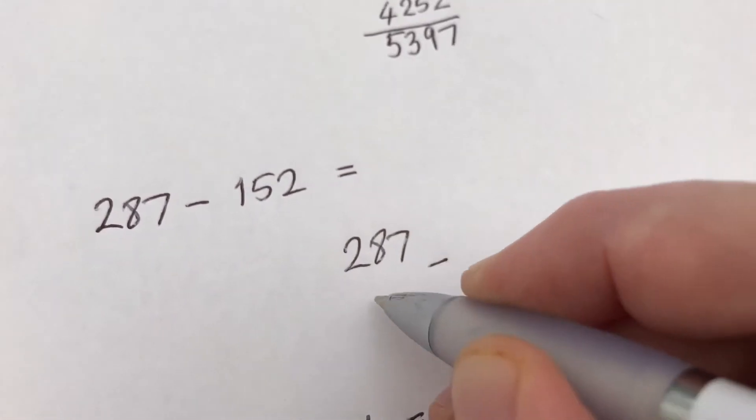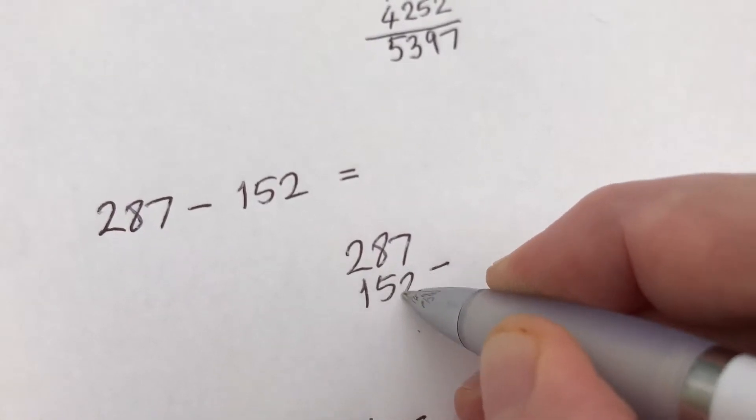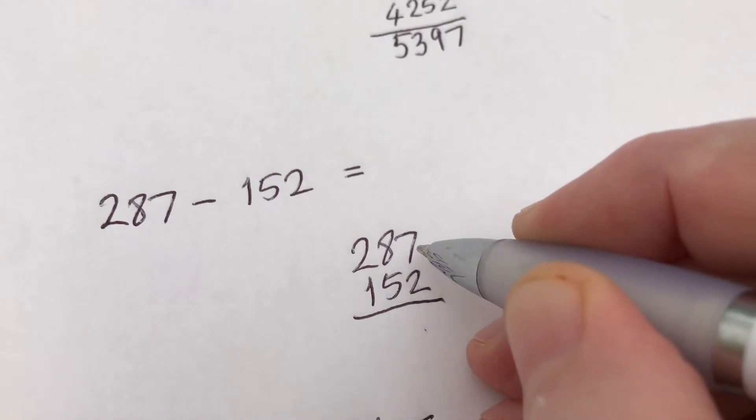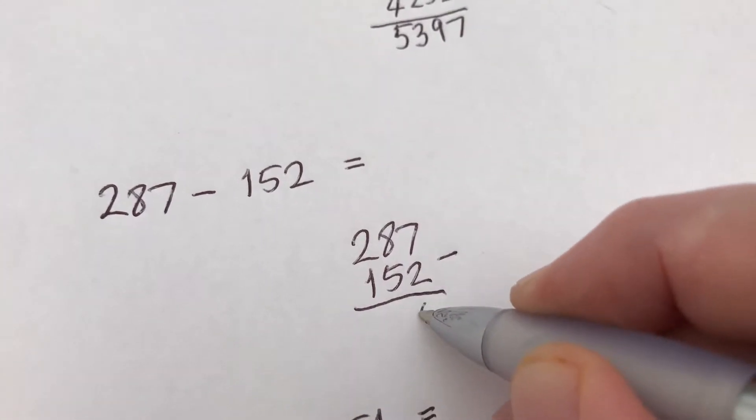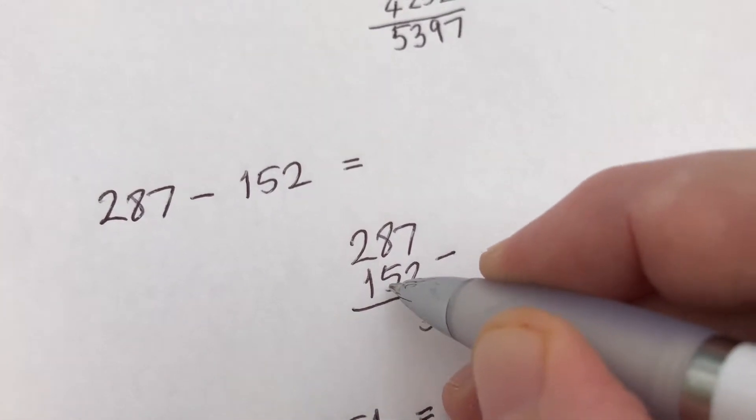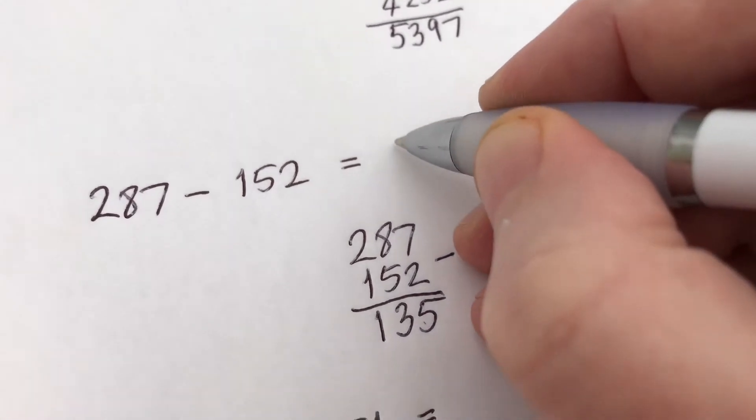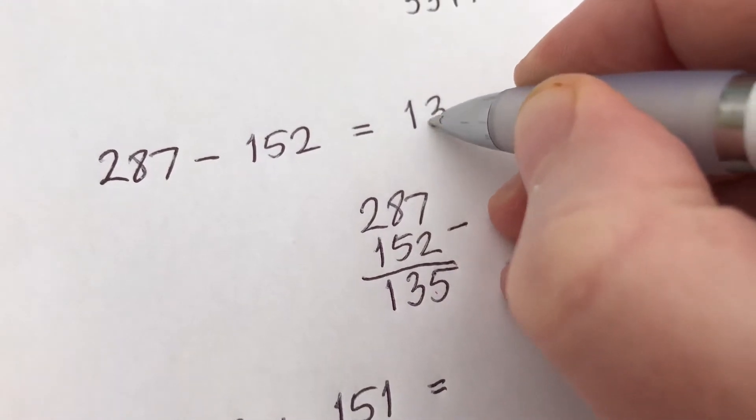The next one: 287 minus 152. 2 away from 7, so it's 7 minus 2 which is 5. 5 away from 8 is 3. 1 from 2 is 1. So our answer is 135.